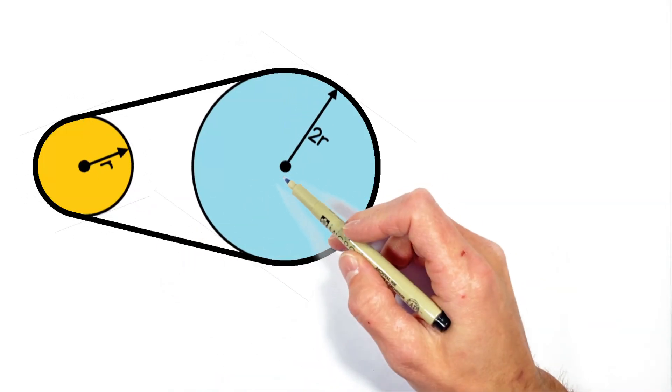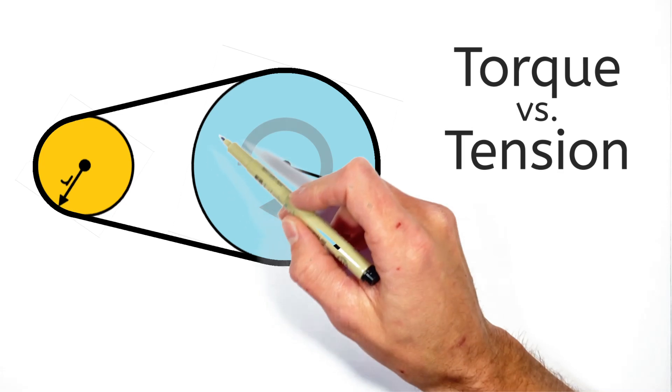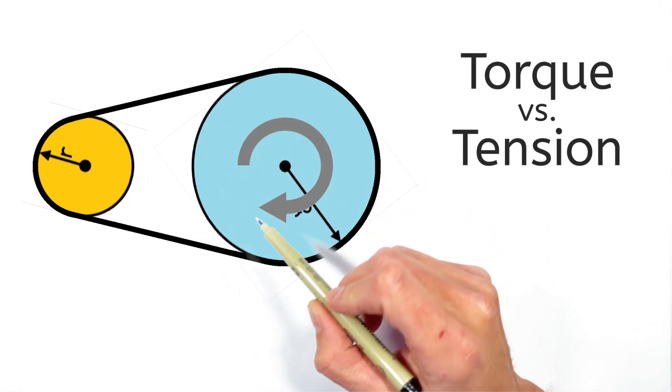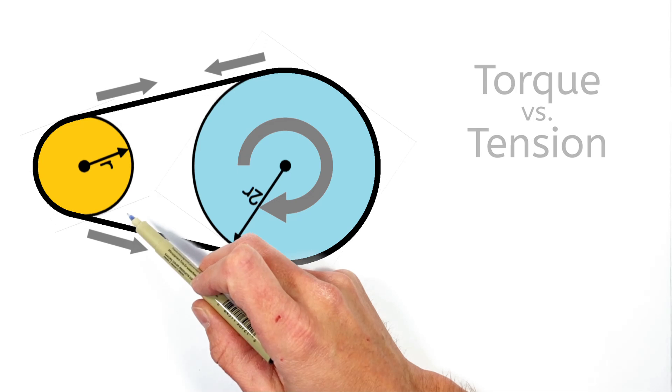Alright, today we're taking a look at a belt and pulley setup in order to understand the relationship between the torque acting on a pulley and the forces in the belt causing that other pulley to turn.